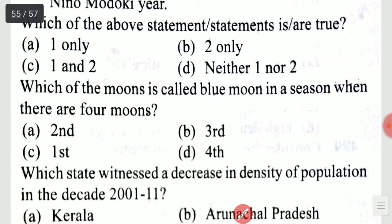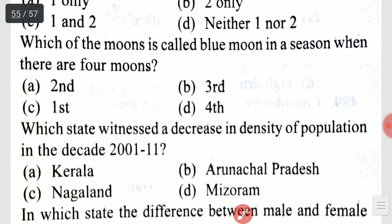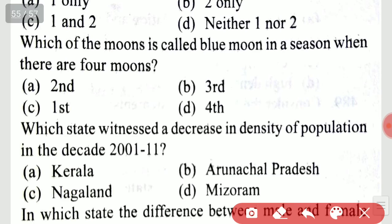Which of the moons is called a blue moon in a season when there are four moons? It is the third.